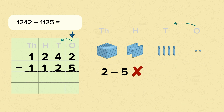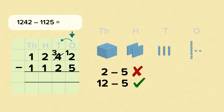We go to the tens and we exchange one ten for ten ones. To show that we've done this we cross out the original number in the tens column and write the number that's one less, because now there are only three tens in the tens column. Now we go back to the ones column, and instead of just two ones we've now got twelve ones, because we've got that extra ten exchanged from the tens column. Now that we've got twelve ones we can subtract the five.